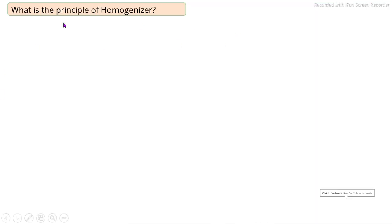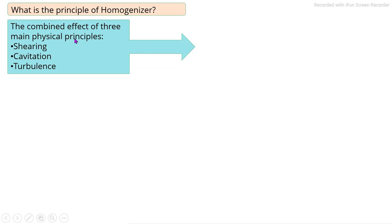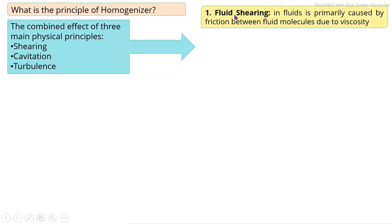What is the principle of homogenization? Size reduction of liquid food products by the application of one or more principal forces. The first force is the shearing force — the internal shearing force in the fluid due to the viscosity of that liquid, which is also responsible for size reduction.